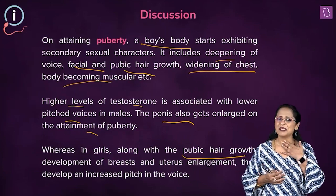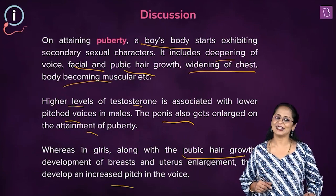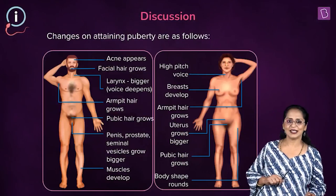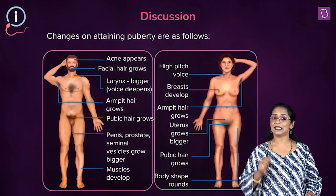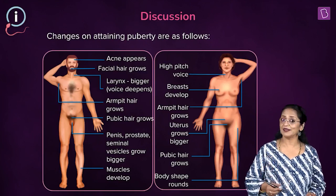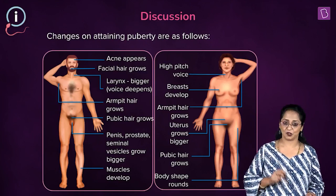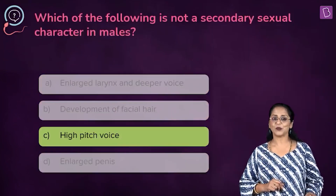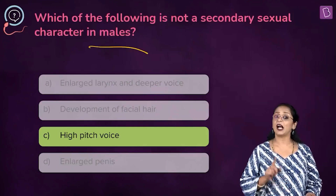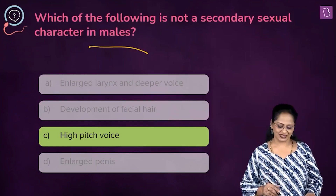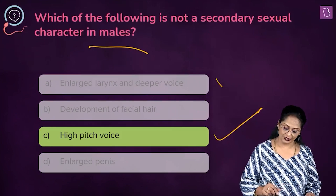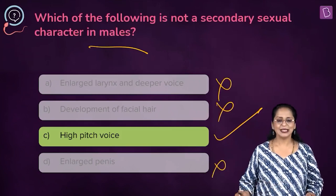Girls also develop a round body shape and high-pitched voice. A summary shows the secondary sexual characters found in boys and girls when they reach puberty. So the right answer for which of the following is not a secondary sexual character in males is high-pitched voice — that belongs to females. C is not a secondary sexual character in males, so C is the right option. Eliminate A, B, and D.